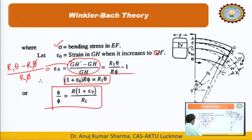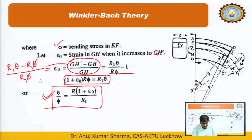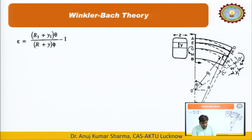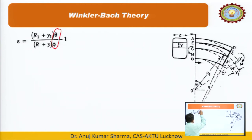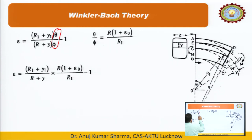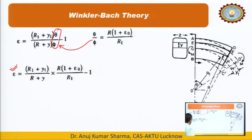We substitute the value of θ/φ back into the strain expression for ε. Putting that value in: ε = [(R1 + Y1)/( R + y)] × [R(1 + ε₀)/R1] − 1. After taking R to the denominator and R1 to the other denominator, this simplifies to ε = [(1 + y/R1)/(1 + y/R)] × (1 + ε₀) − 1.